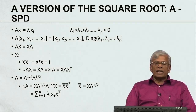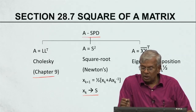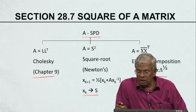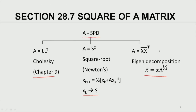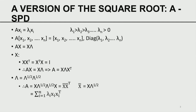In this particular case we are going to use the Eigen value decomposition based square root version. X bar is a matrix, and this can be written as X bar times X bar transpose. X bar is equal to X times lambda to the power half, where lambda to the power half is the square root of the diagonal matrix consisting of Eigen values. Since the matrix A is positive definite, all the Eigen values are positive and square roots exist. This is how the matrix square root is defined using Eigen decomposition.